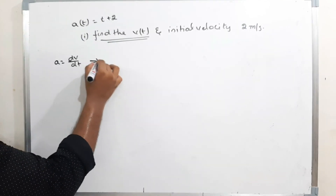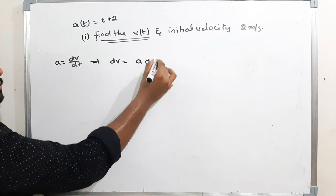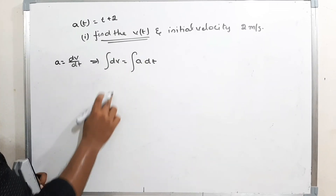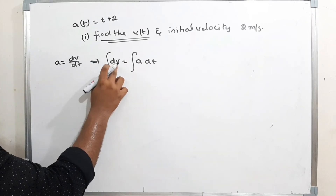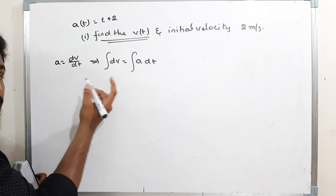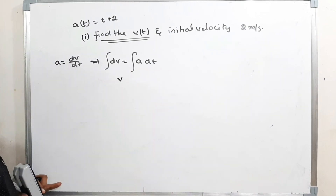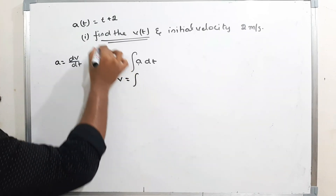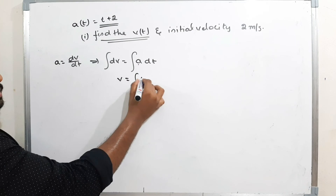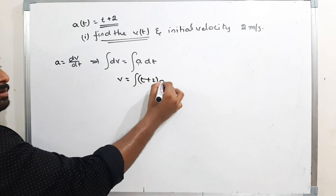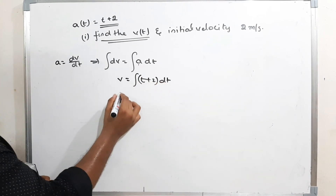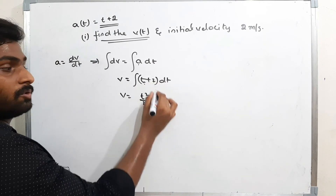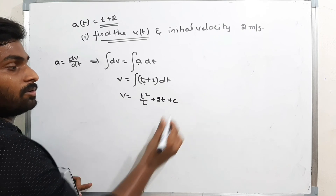Integrating both sides: the integration of dv is v, and the integration of a = t + 2 gives t²/2 + 2t + C, where C is the constant of integration. We don't omit the constant here because we need to use the initial condition.